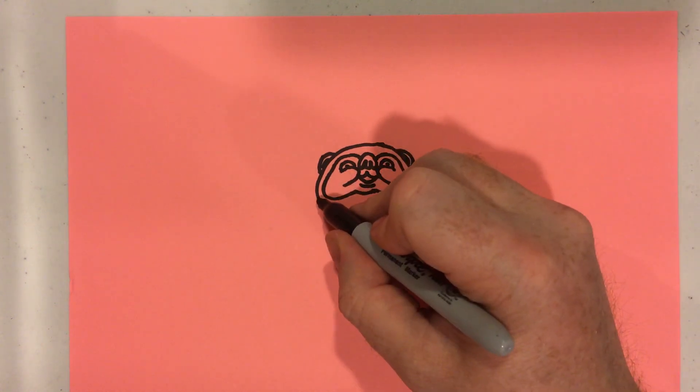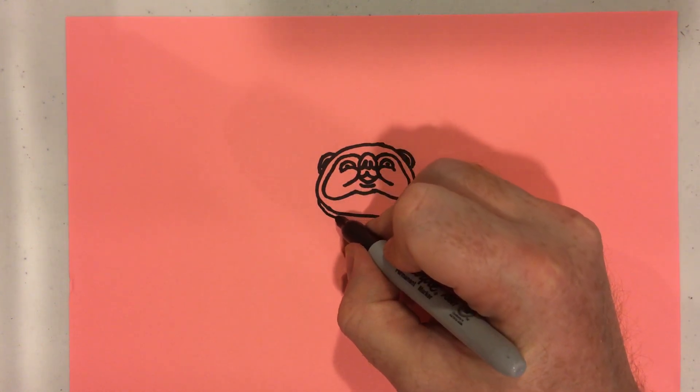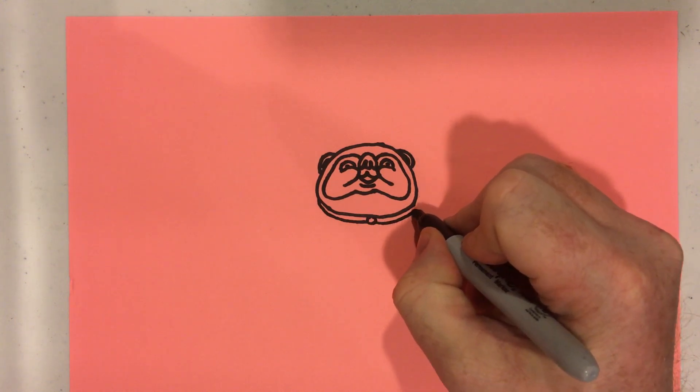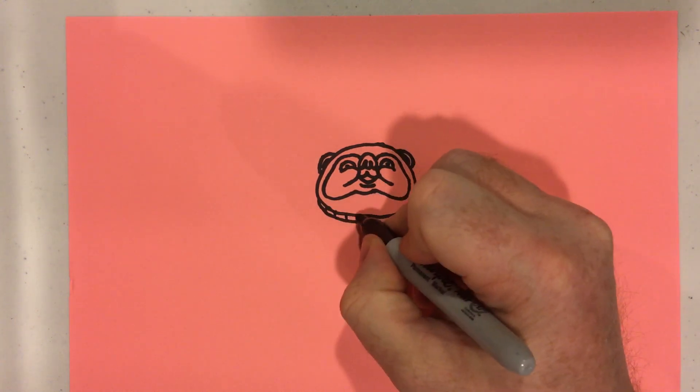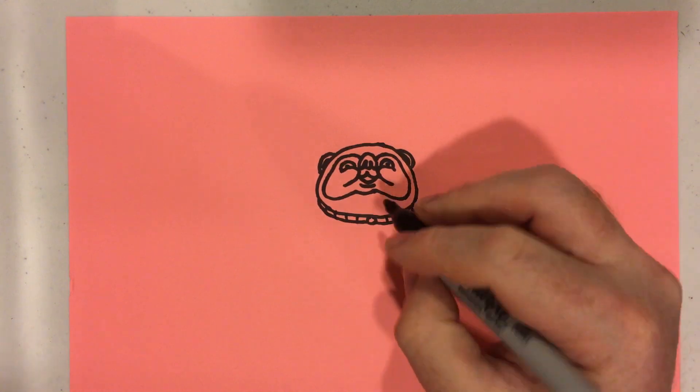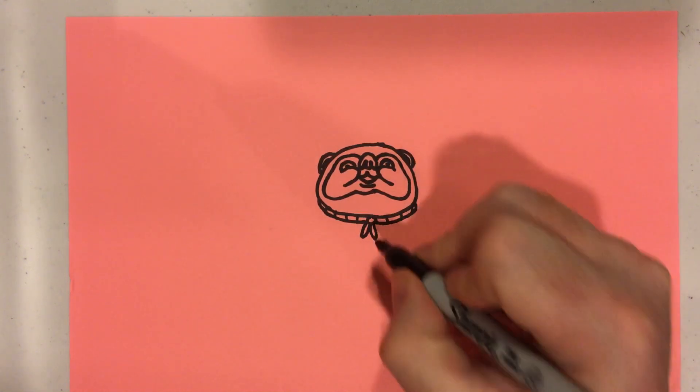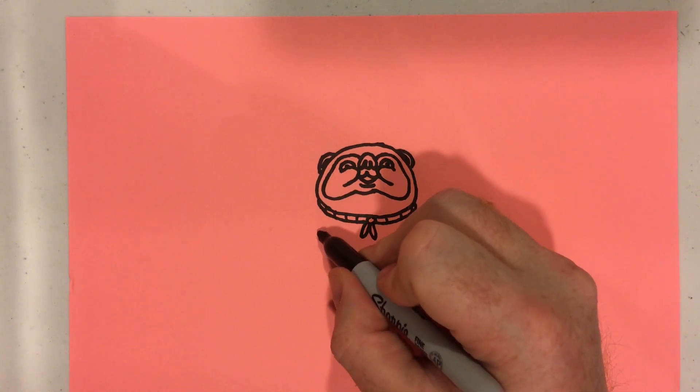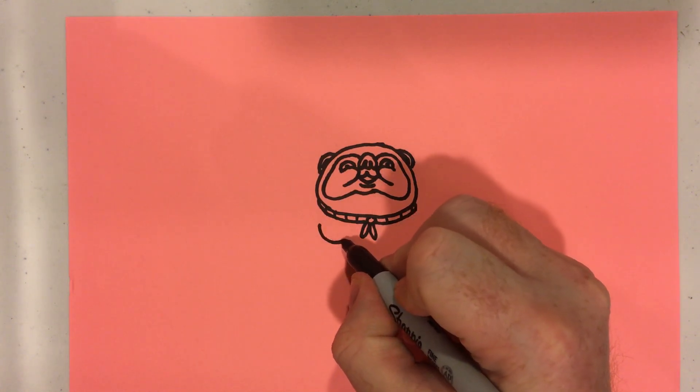Then he wears a little rope around his neck to hold on his hat, so we're going to draw that rope. And he's very chubby, so he's got some chub on him.